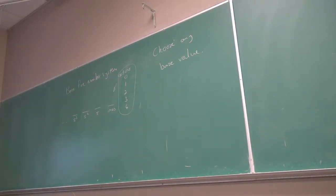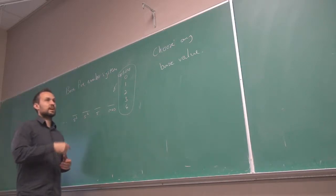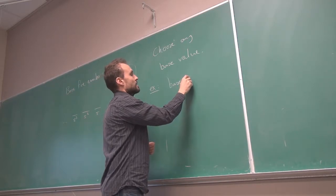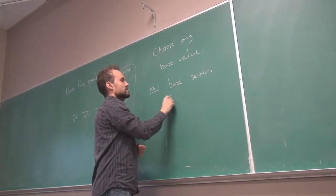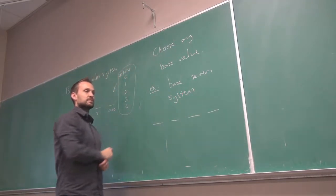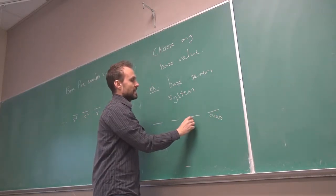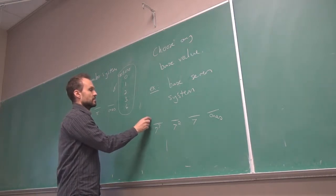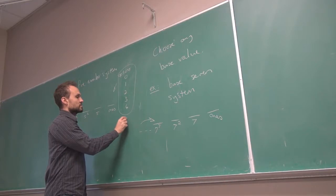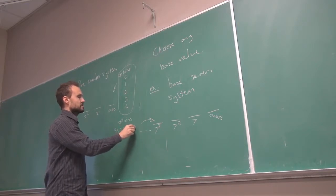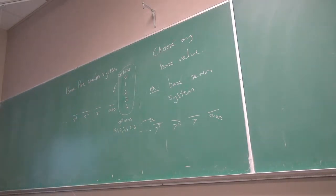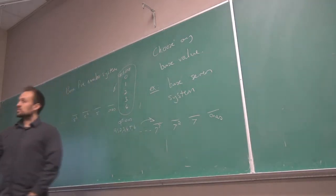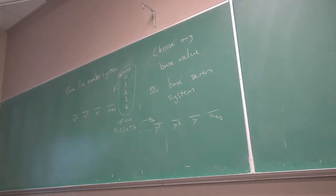What about 12? As the base value changes, the options will change as well. For example, in a base 7 system, I count in 7s — ones, groups of 7, 7 squared, 7 cubed, and so on. The options for every single place will change: 0, 1, 2, 3, 4, 5, to 6. As soon as I have 7, it rolls over to the next group.